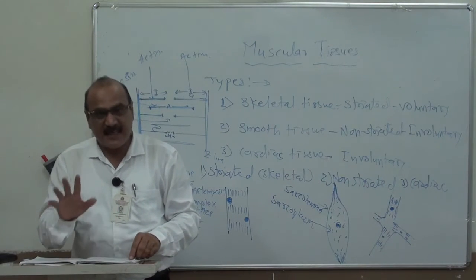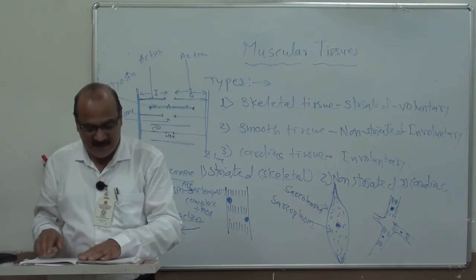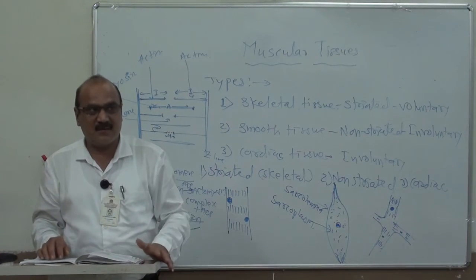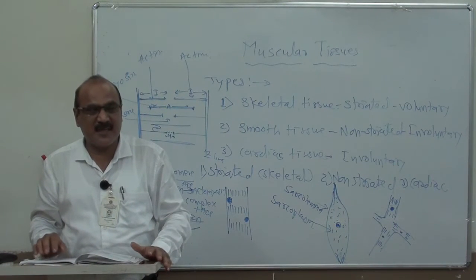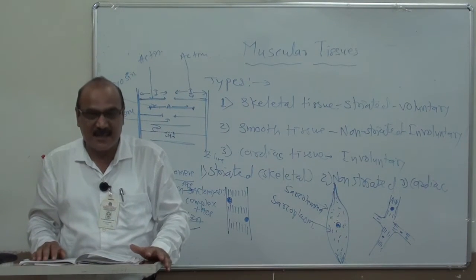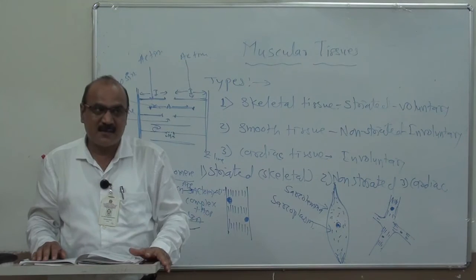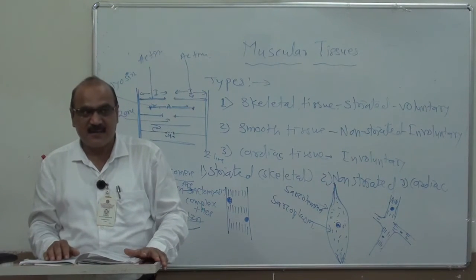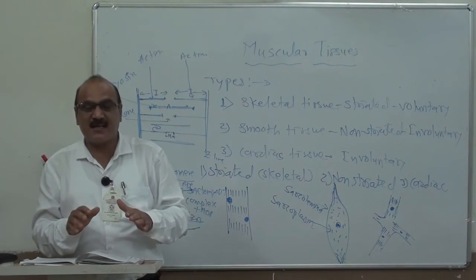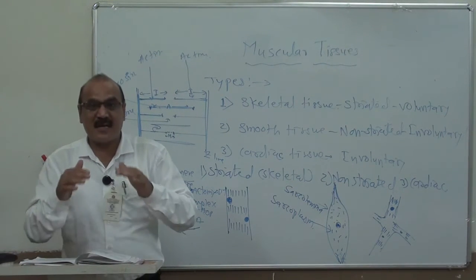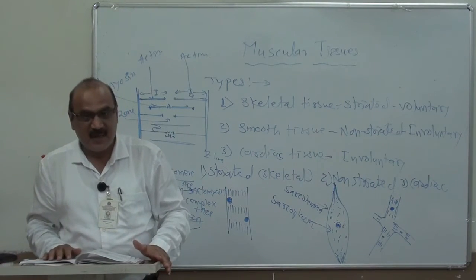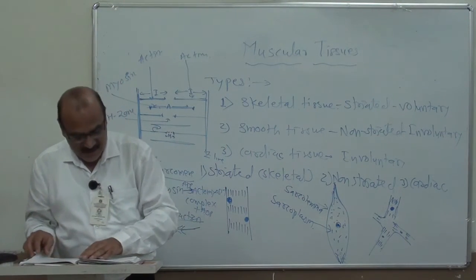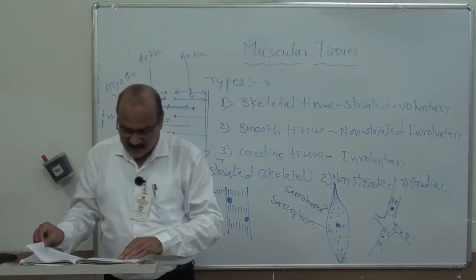The actin and myosin filaments are important for the sliding filament theory, proposed by scientist H.E. Huxley. This theory is related to the mechanism of contraction and relaxation of muscles.